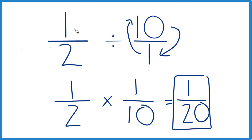And that kind of makes sense, because we have 1 half — it's a small number. We're trying to see how many times 10, this whole number, fits into this small number here. We should end up with an even smaller number, which we do. This is Dr. B doing 1 half divided by 10. Thanks for watching.